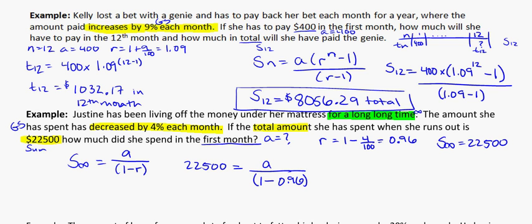So put this in the solver. And you will get A is equal to $900. So she spent $900 in her first month. And from there it decreased. The amount she spent each month decreased until she ran out of money. So she tried to eek it along as long as she could.